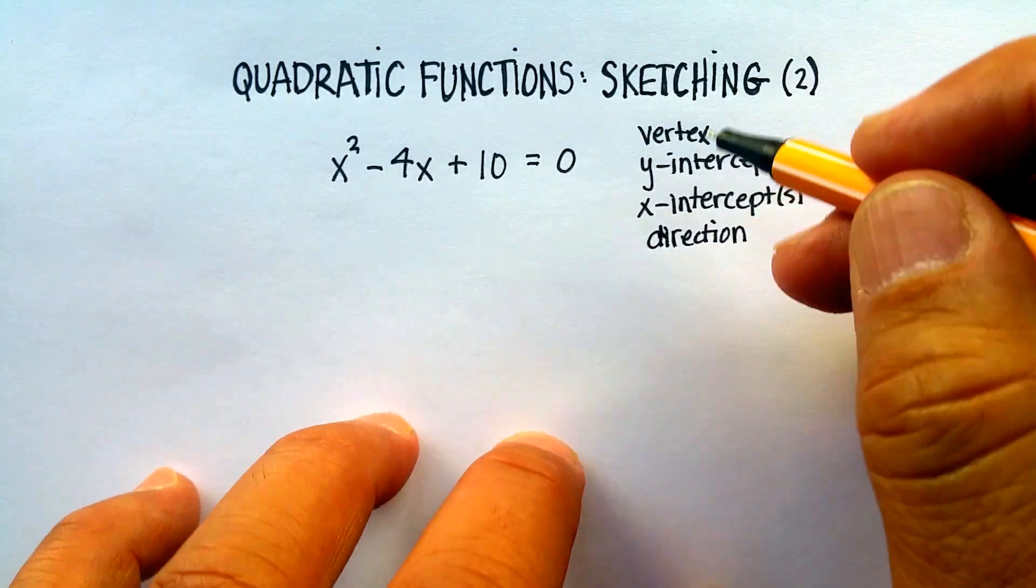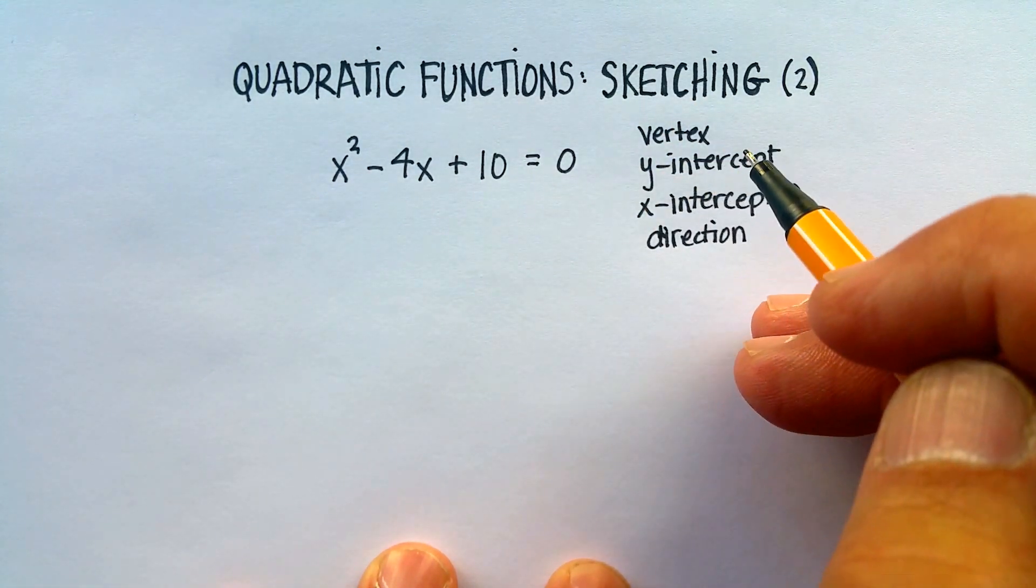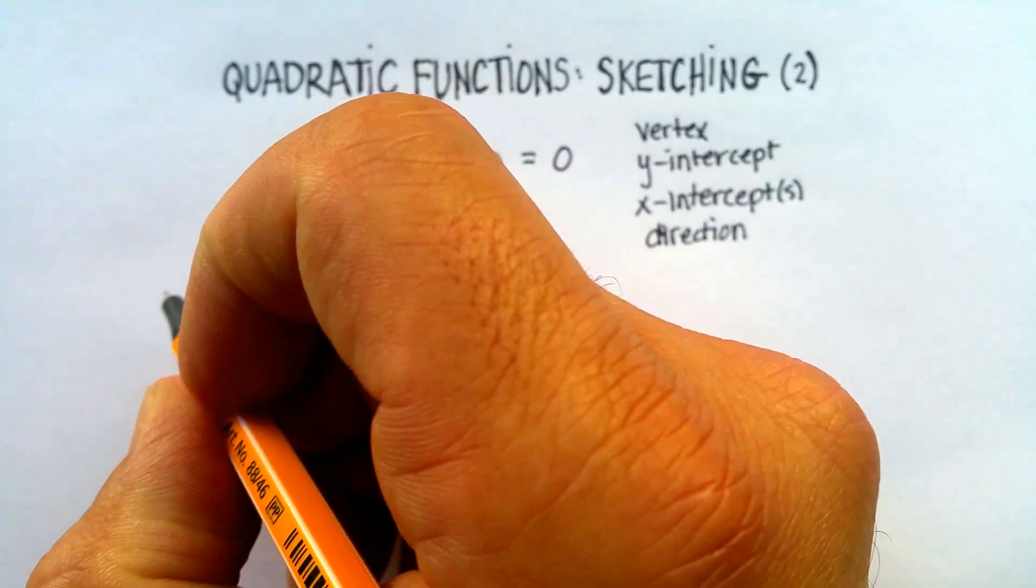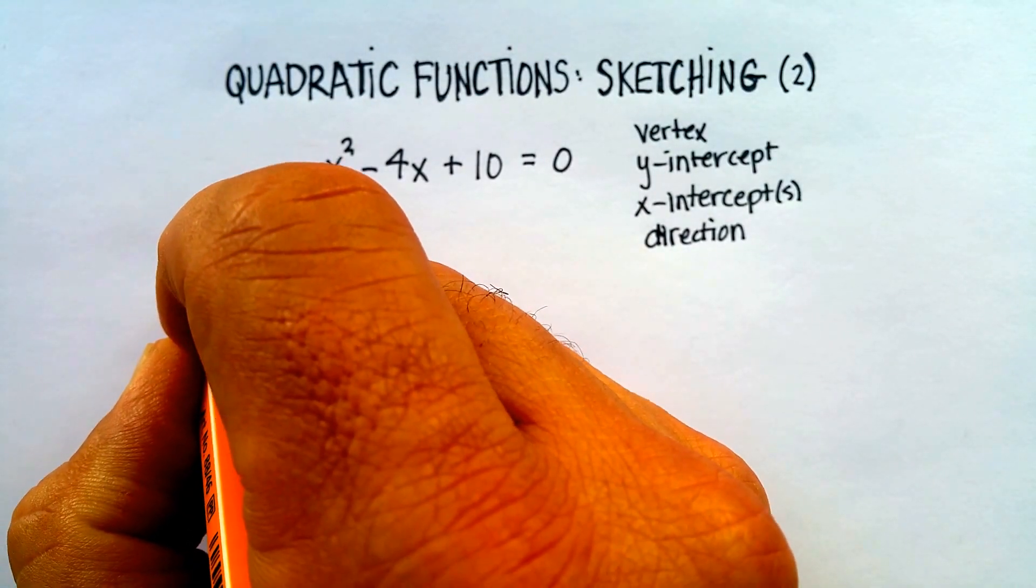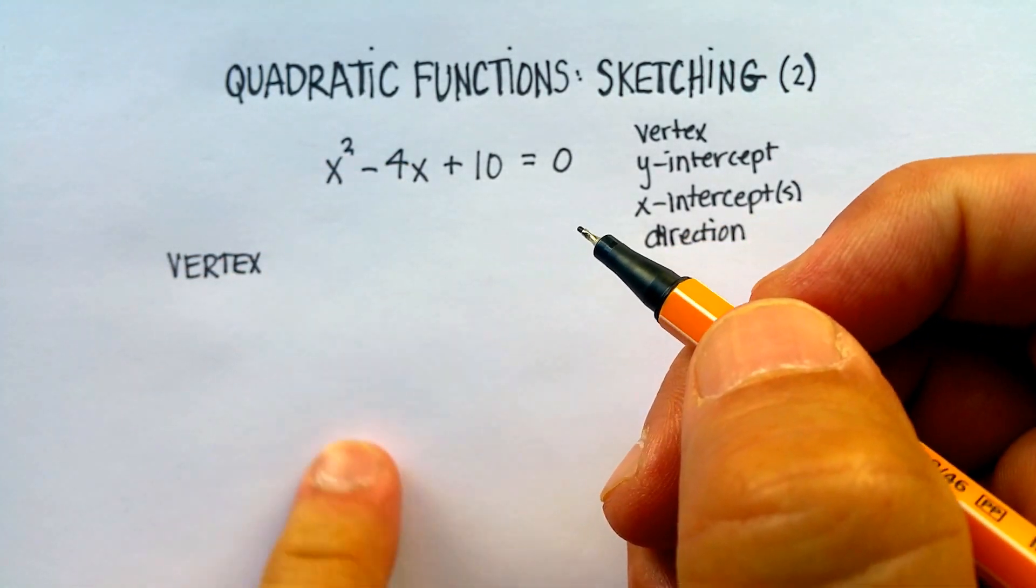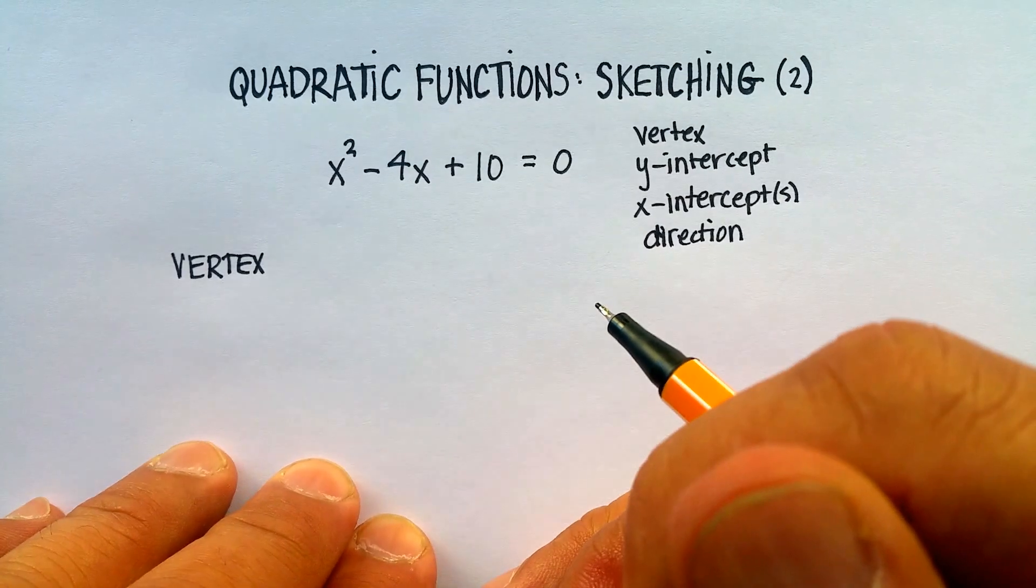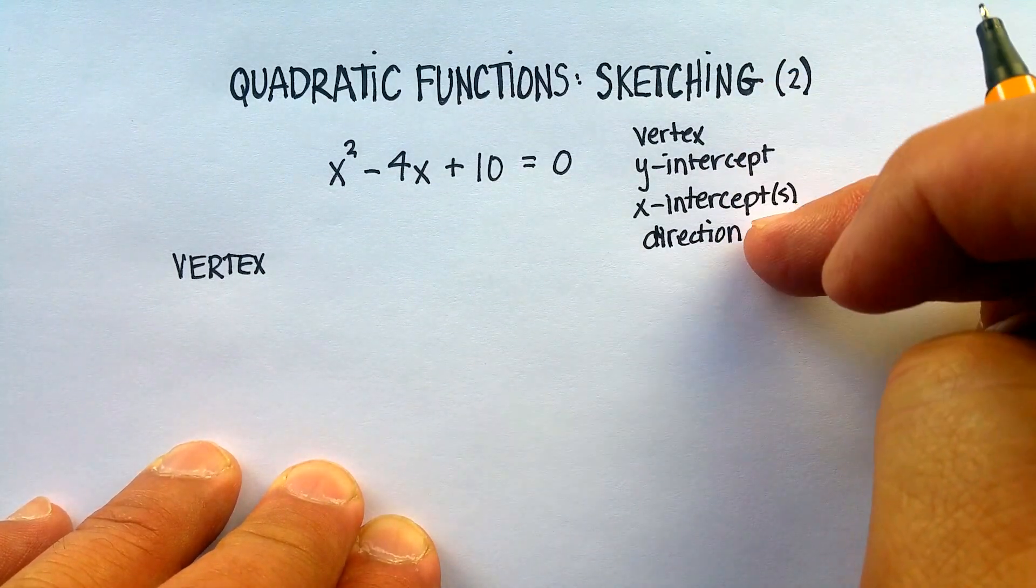If these are our four categories that we need to find, let's organize this in a very efficient manner. We'll call our first thing to do the vertex. Remember, math is really just a language, and you're writing like some kind of essay about what you're solving. This is like our outline.